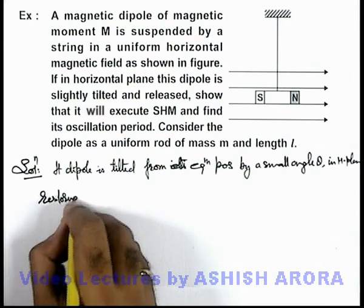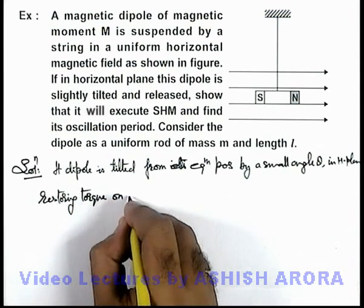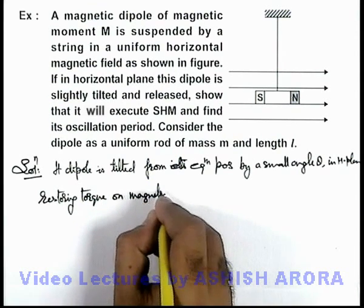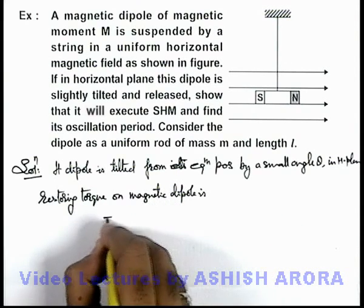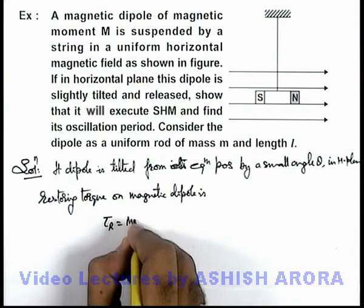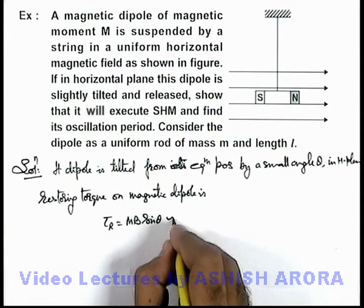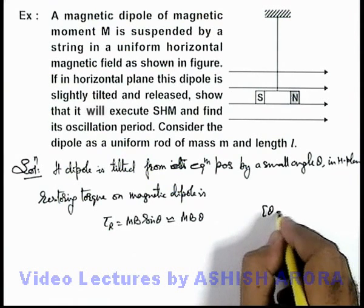The restoring torque on the magnetic dipole is τ = MB sin θ, which can be approximated as MB θ because theta is very small.